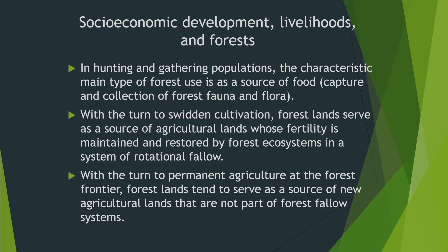I will elaborate more on the modes of shifting cultivation, knowledge systems, and various elements of this agricultural practice in the later part of the course, including case studies. Moving on from Jhum or swidden cultivation, people have also engaged with sedentary agriculture — wet rice or permanent agriculture at the forest frontier — where forest lands serve as a source of new agricultural lands not part of the forest fallow system.